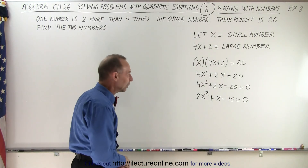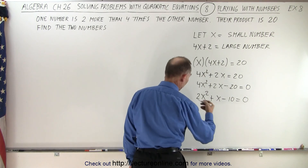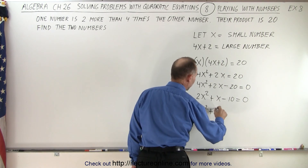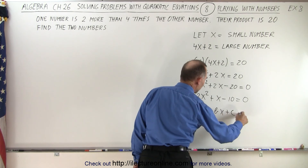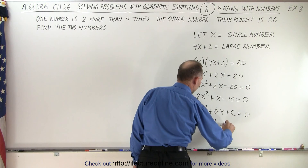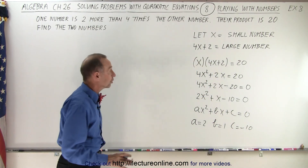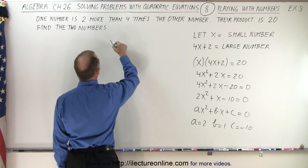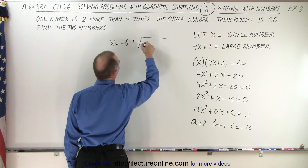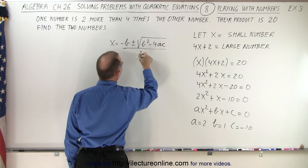I don't think we can factor that, so we're going to use the quadratic formula. This is in the form ax² + bx + c = 0, where a = 2, b = 1, and c = −10. We plug that into the quadratic formula: x = (−b ± √(b² − 4ac)) / 2a.